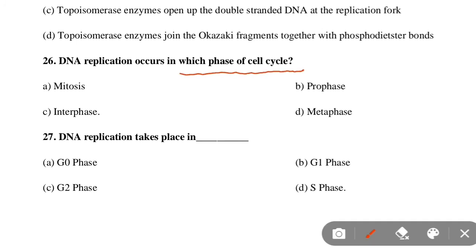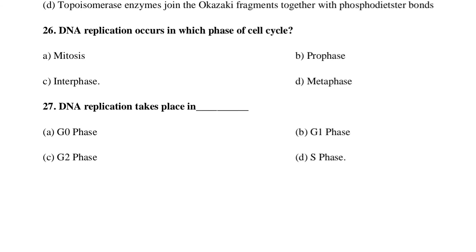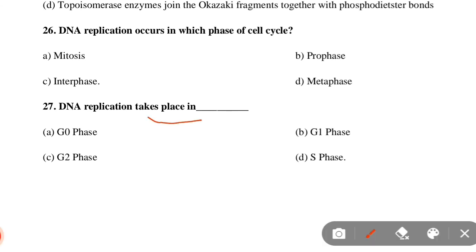Next MCQ: DNA replication occurs in which phase of the cell cycle? Option A: Mitosis/prophase, Option B: Interphase, Option C: Metaphase. Option B is correct — interphase. Next MCQ: DNA replication takes place in which phase? Option A: G0 phase, Option B: G1 phase, Option C: G2 phase, Option D: S phase. Option D is correct — DNA replication takes place in the S phase of the cell cycle.